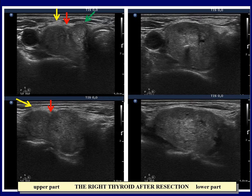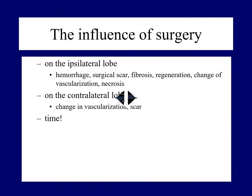Let's see the lower part of the lobe, which contains a more hyperechogenic lesion with small cystic areas and coarse calcifications. We cannot decide that this is a nodule in this view.